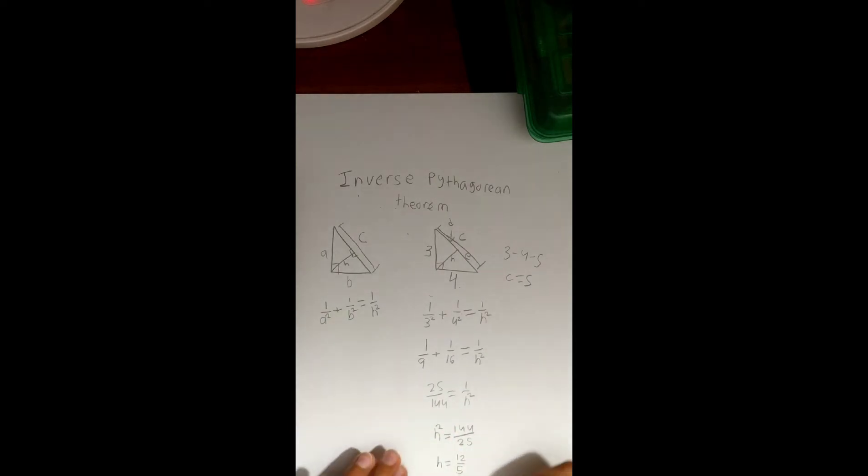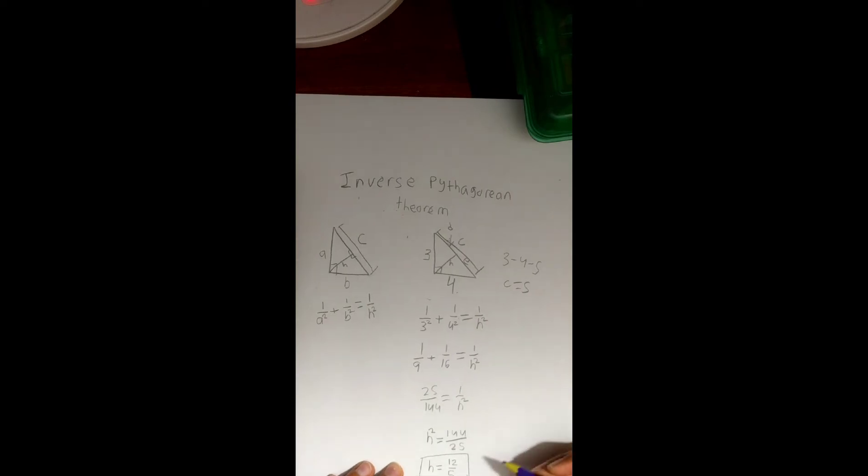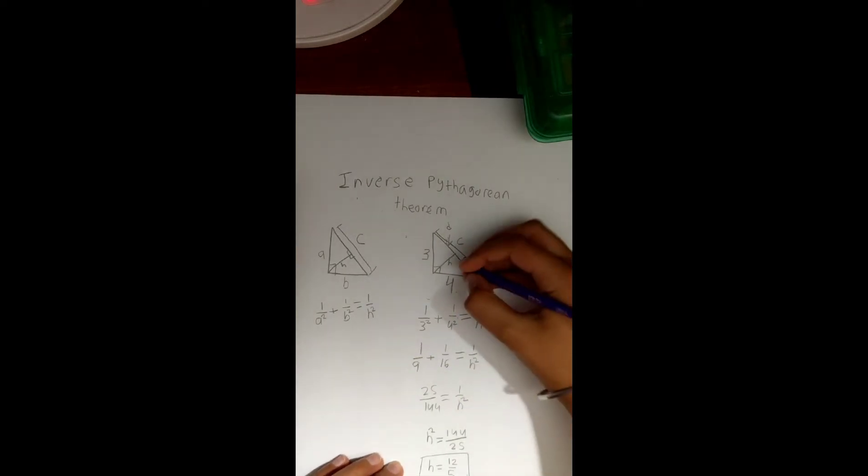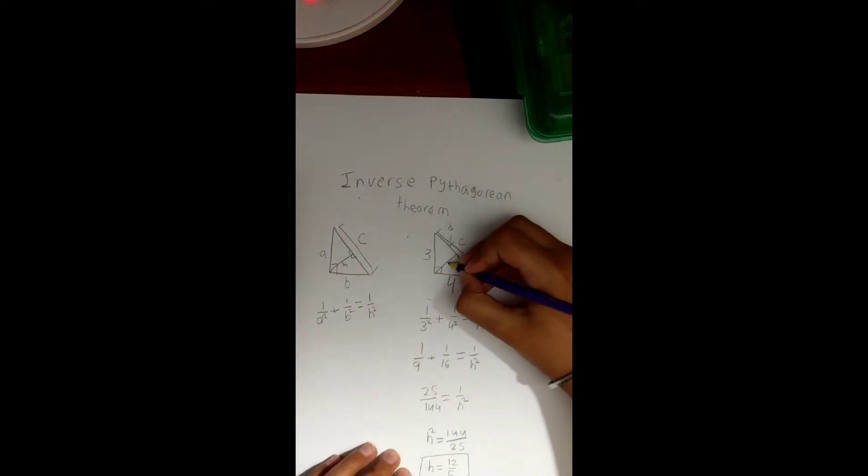Okay, so now anyway, we've got our value of h, which is down here. And now basically we know that this h over here is 12 by 5.